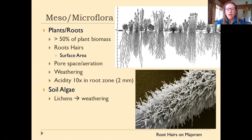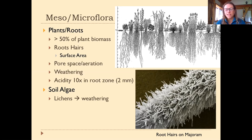If you zoom in on any visible root string, it would be covered in root hairs. Research shows that the soil conditions in which a plant is growing actually influence how many root hairs it grows. In cases where we use too much synthetic nitrogen or phosphorus, or spray too many pesticides, insecticides, or herbicides, we actually create plant roots that grow without many root hairs. Those plants then have difficulty surviving without water and easy access to nutrient pulses that we must continue to supply synthetically.